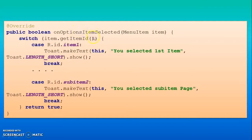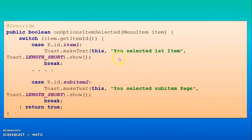After this you can use the method onOptionsItemSelected. This is used to perform event handling. After selecting a menu option or sub-option, if you want to perform some action, you use onOptionsItemSelected. In each case you can use the ID of your menus or sub-menus. For example, if the user clicks on the first item, they get the message 'You selected first item'.